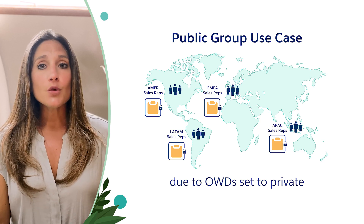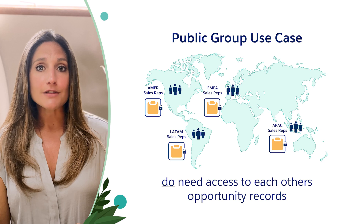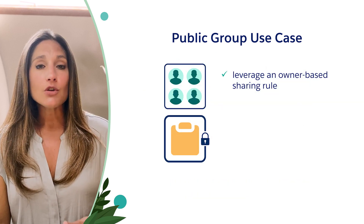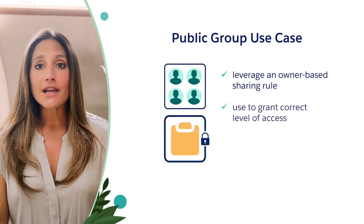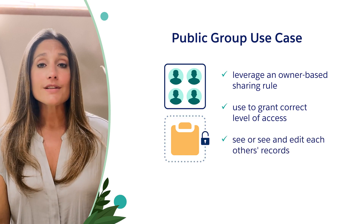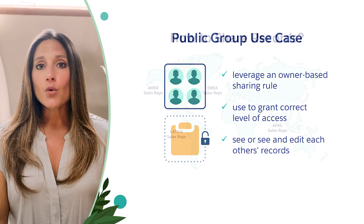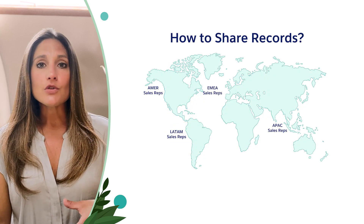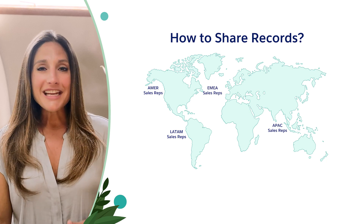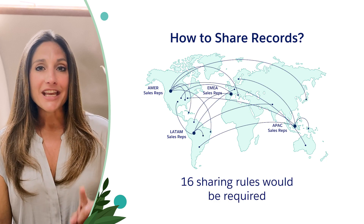However, we do want to grant them access into each other's opportunity records. By using an owner-based sharing role, the admin can grant the correct access level needed — either the ability to see, or see and edit, each other's opportunity records. So in order to meet our requirement to share opportunity records to this global team, we would need to create 16 sharing roles, and here's why.